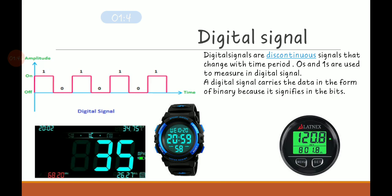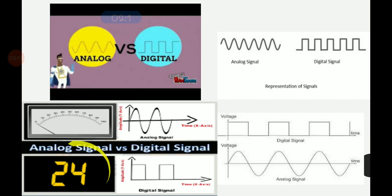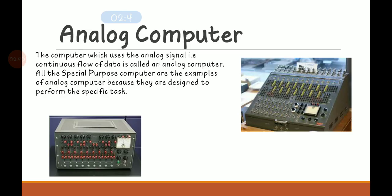You can see the difference between analog and digital signals here. Analog signal works with a continuous sine wave, whereas digital signal works with a discrete waveform. For example, an analog meter shows a needle-like structure, while a digital display shows discrete values. Analog signal works with a continuous flow of data, whereas digital signal works with a discrete flow of data.